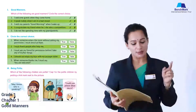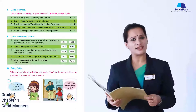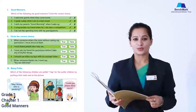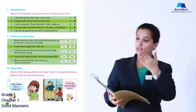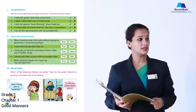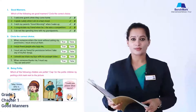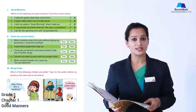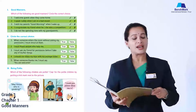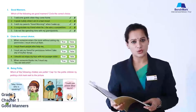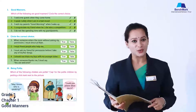Second section — circle the correct choice. First: 'When someone enters the room without asking my permission, I must shout at them.' No, please do not shout at them. For example, if you want to go to the washroom during class, you ask the teacher: 'Ma'am, may I go to the washroom?' If you just run out without permission, the teacher will inquire what happened.